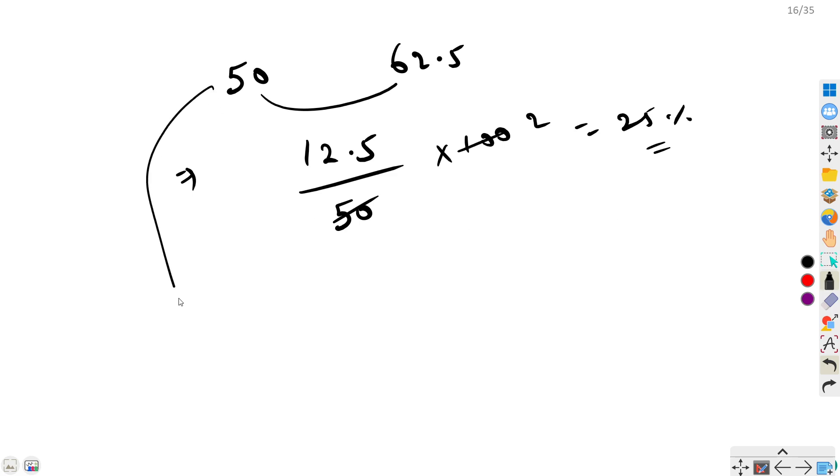The other way could be you can take the ratio of these two. 50 is to 62.5. We know that both are multiples of 12.5, so 12.5 times 4 is 50, 12.5 times 5 is 62.5. So 4 is to 5, difference of 1 upon 4, times 100 equals 25 percent.